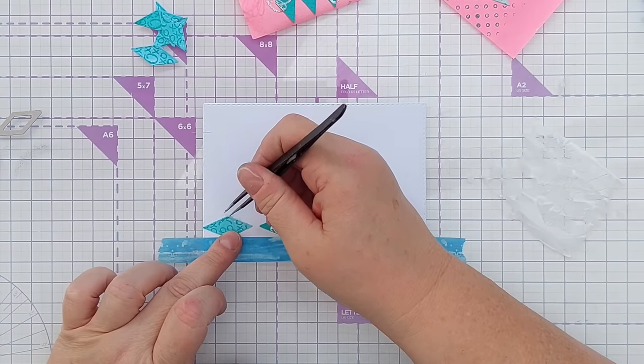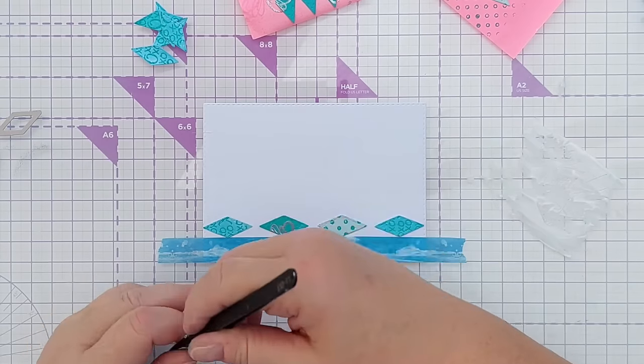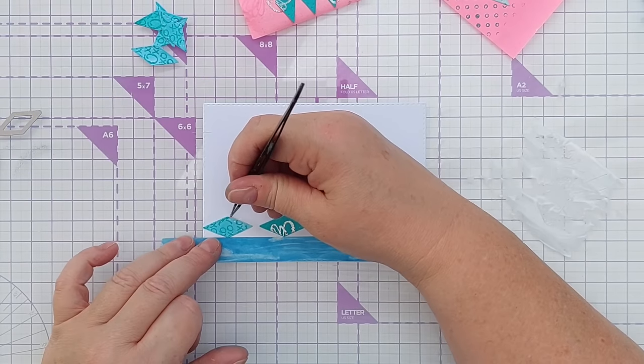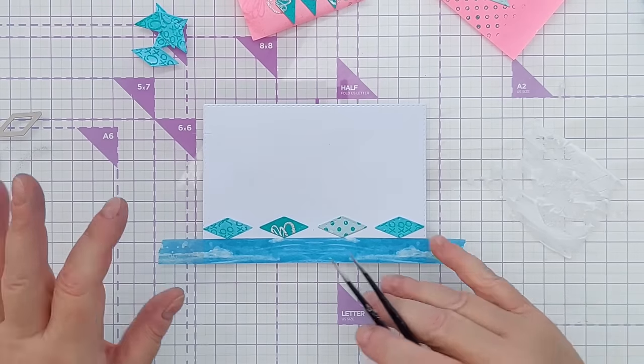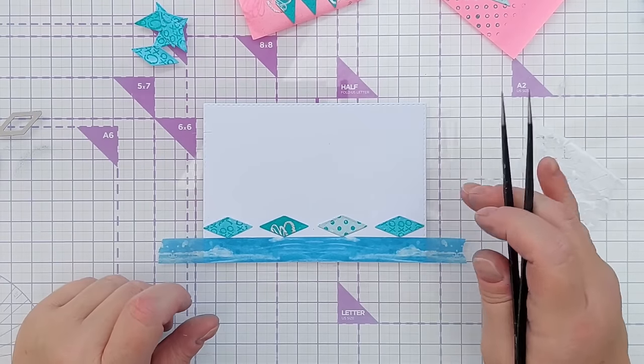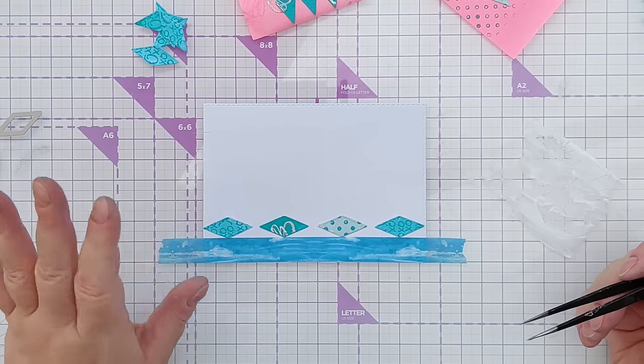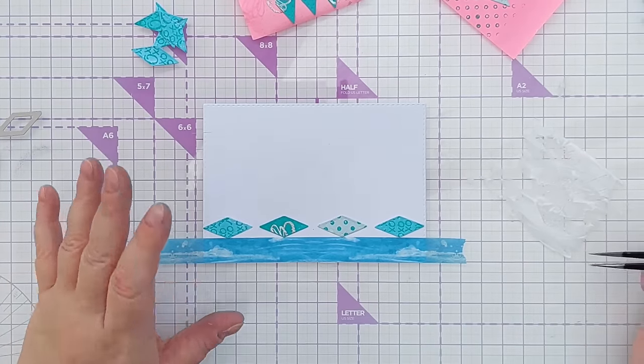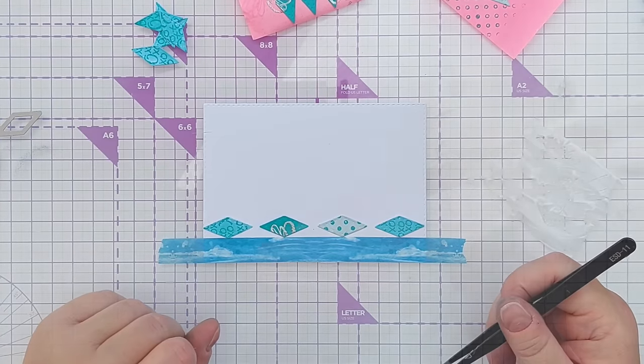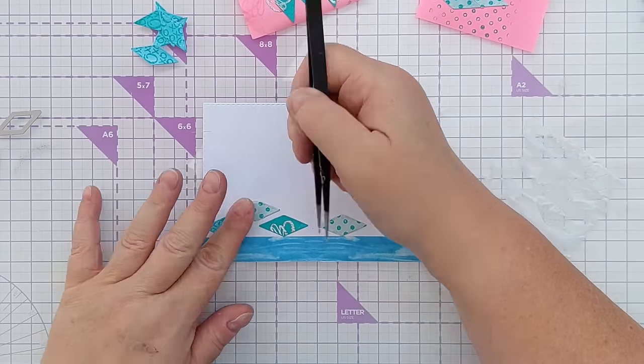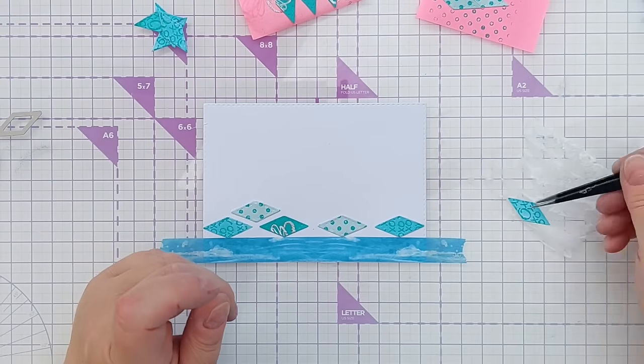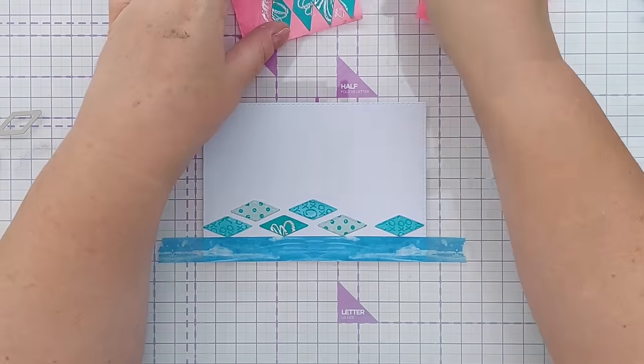I'm using high-tech PVA for this because it kind of grabs the die cut onto the card and holds it there while it dries. I find with matte gel medium, you get a lot of wiggle room, but if you knock what you're trying to stick down, then it will move. Whereas if you knock that now, it's not going anywhere. So sometimes I use matte gel medium, sometimes high-tech PVA.